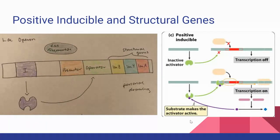Inducible control is when transcription is normally off, but is turned on when a small molecule binds to the regulatory protein.